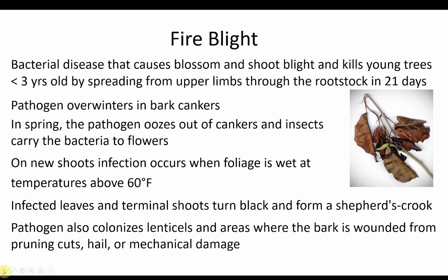Probably the most serious disease in the Midwest is fire blight. This disease is caused by bacteria and kills blossoms, shoots, rootstocks such as M9 and M26, and can even kill young trees less than 3 years old. All of the Geneva rootstocks are resistant to fire blight. This pathogen overwinters in bark cankers. In the spring, bacteria ooze out of cankers, and insects, including bees, carry the pathogen to flowers. On new shoots, infection occurs when the foliage remains wet for an extended period at temperatures above 60 degrees. After infection, the leaves and terminal shoots turn black and bend over, forming a shepherd's crook of dead tissue.